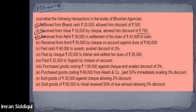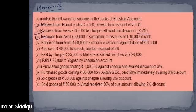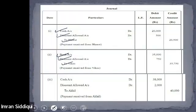Third transaction: received from Akhil 38,000 in settlement of his dues of 40,000 in cash. Vanisha answers: cash account debit 38,000, discount account debit 2,000, to Akhil account 40,000. Perfect, very good. The correct general entry is cash account and discount allowed account debit, to Akhil account.